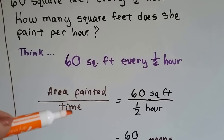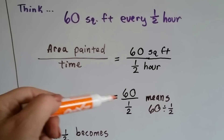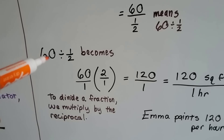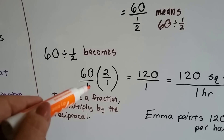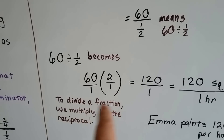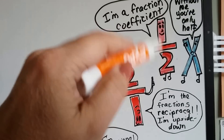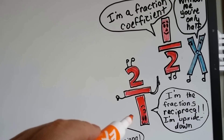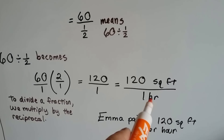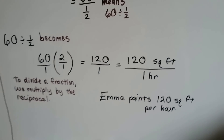We put the area painted over the time: 60 square feet over one-half hour. Because this is just a little division problem, it means 60 divided by one-half. When we divide by a fraction, we multiply by its reciprocal. So 60 divided by one-half becomes 60 over 1, and we flip the half upside down to get 2 over 1. We multiply straight across: 60 times 2 is 120, and 1 times 1 is 1. So we have 120 over 1 — that's 120 square feet per hour. She paints 120 square feet per hour.